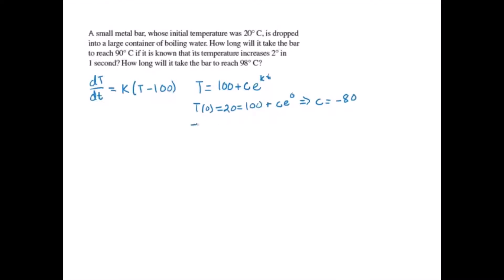And if we know T(1) is equal to 22, since it says that it increases 2 degrees in 1 second, we get 100 minus 80 times E to the K times 1, which gives us K is equal to ln(39/40), which is approximately equal to negative 0.0253.